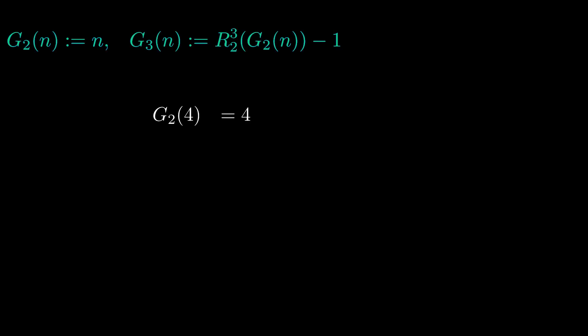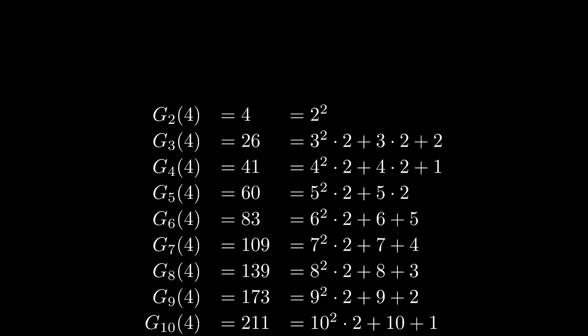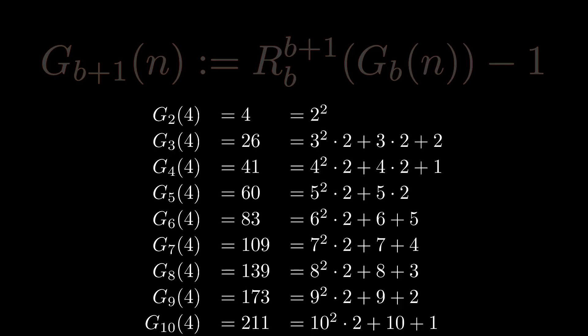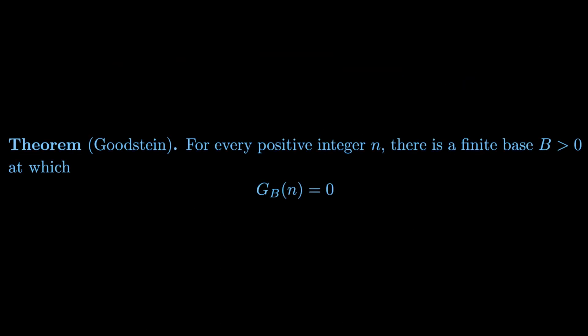Now that we have this fancy notation, we can formalize all the Goodstein sequences. Starting with some number n, which we'll call G_2, define G_3 as the result of taking the pure base 2 expansion of G_2, replacing every 2 with 3, and then subtracting 1. G_4 is then defined similarly. In general, after we take G_2 to be some number n, we take G_(b+1) to be R_b_(b+1) of G_b, and then subtract 1. So, how do we prove that for any positive integer n, there is a finite base at which the Goodstein sequence generated by n terminates?